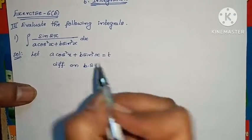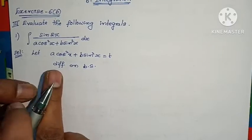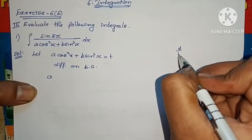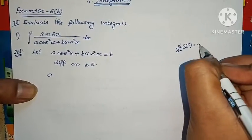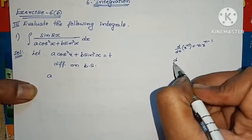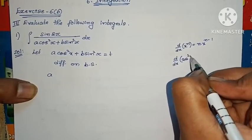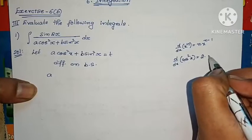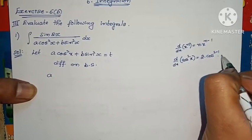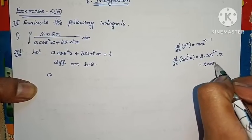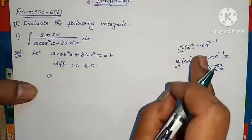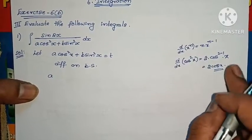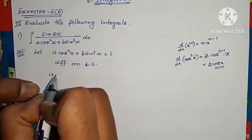Differentiating on both sides. Using the formula d/dx of xⁿ = n·xⁿ⁻¹, d/dx of cos²x: here x is replaced by cosx and n = 2, so we get 2·cos(2-1)x. That is 2·cosx. Then x is replaced by cosx, power is 2, n place lo 2 undi, so we get 2·cosx.